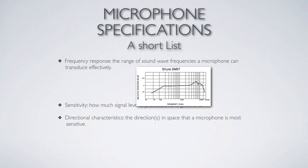There's also a directional characteristic in the microphone — is it sensitive in one direction, all directions, or two directions? The microphone can be pointed in a certain direction if it's unidirectional, toward a source we want to pick up and away from a source we don't want. That's another specification you'll find for microphones.